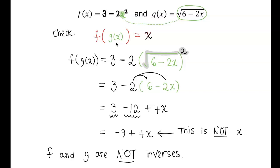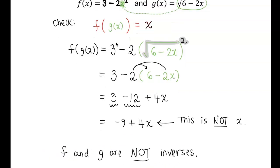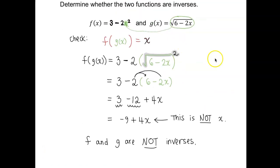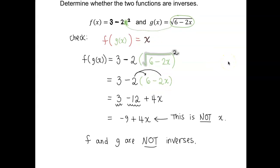And you don't have to continue to check the other composition because the condition is it needs to be true both ways. So the first example that I shared with you, it came out to be not inverses of each other. I'm going to do one more.